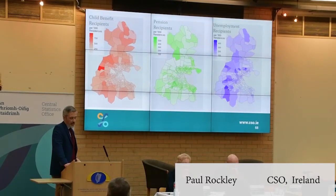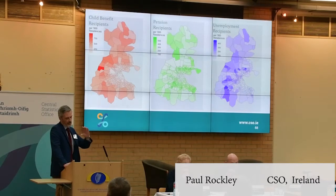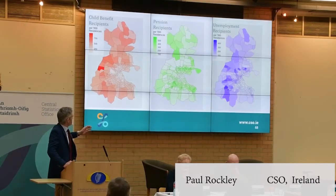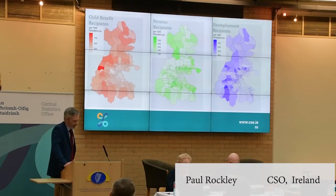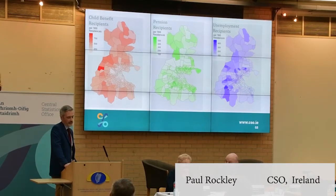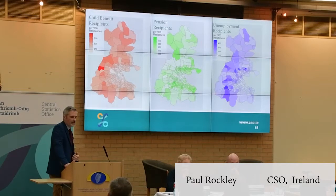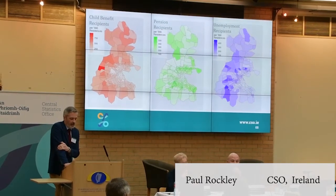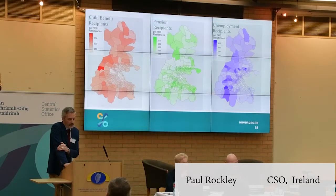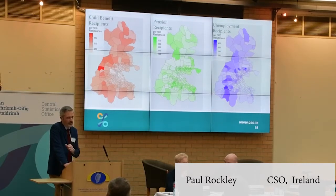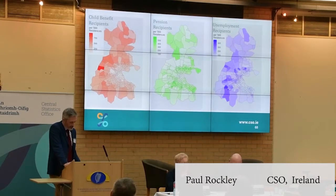For pension recipients, we see a pattern going east to west and north to south of the city — from Howth running west and from Dalkey running west, a line of high proportion of pensioners, which is borne out by the census data. For unemployment recipients, you can see a high proportion to the west and to the north of the city in comparison to the more affluent areas of south Dublin along the coast, which does make sense and squares with the census figures. I will be making these slides available online.